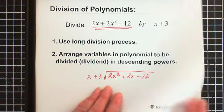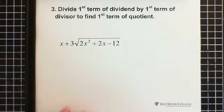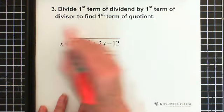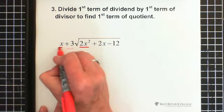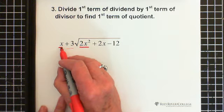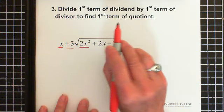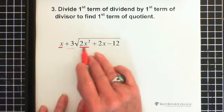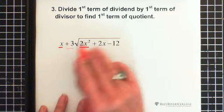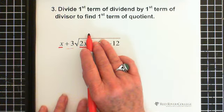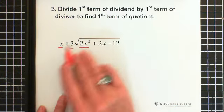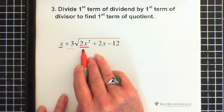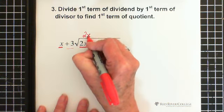The first step: divide the first term of the dividend by the first term of the divisor to find the first term in the quotient. So we're dividing 2x squared by x. Normally I think about what do I have to multiply by x to get 2x squared? And that would be 2x.